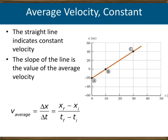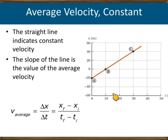For example, during the first 10 seconds the object moves 20 meters, during the next 10 seconds it moves another 20 meters, and again 20 meters in the following 10 seconds. It moves on a regular basis — equal distance in equal time — confirming it has a constant velocity.